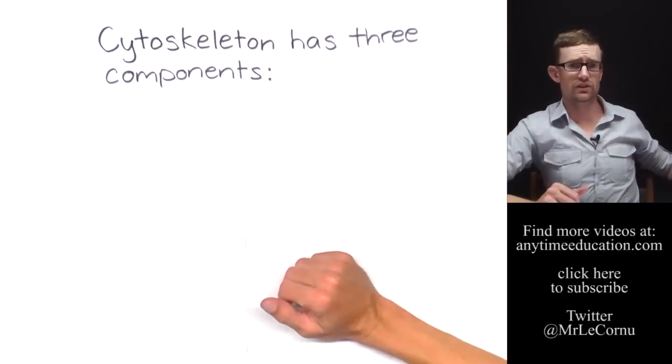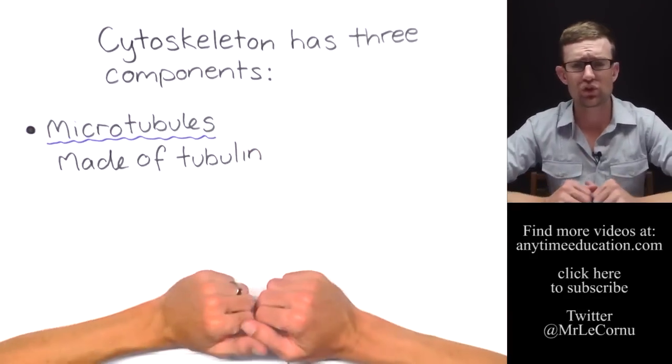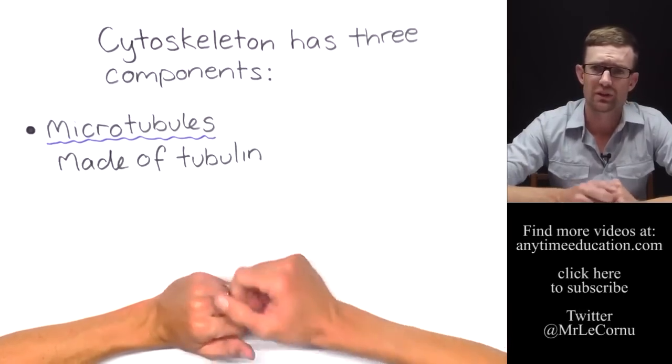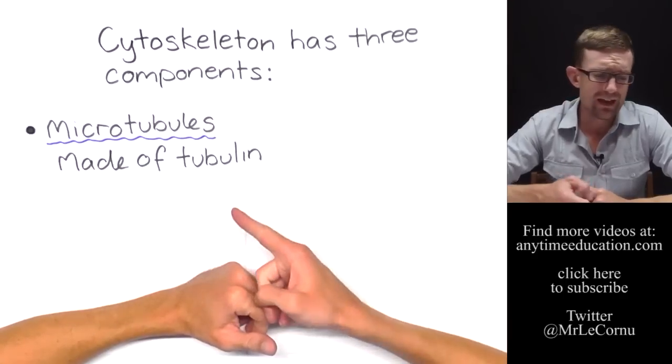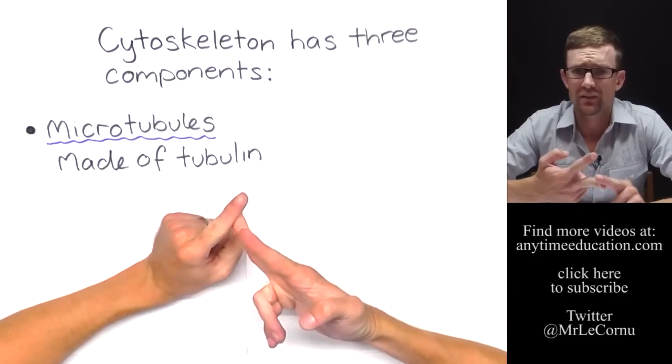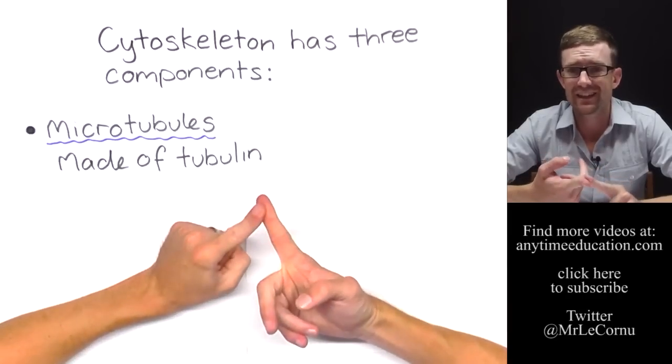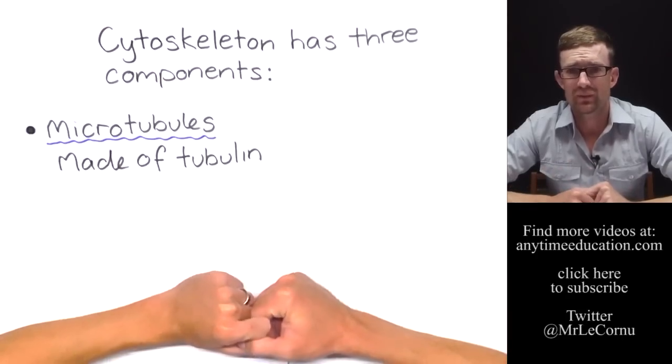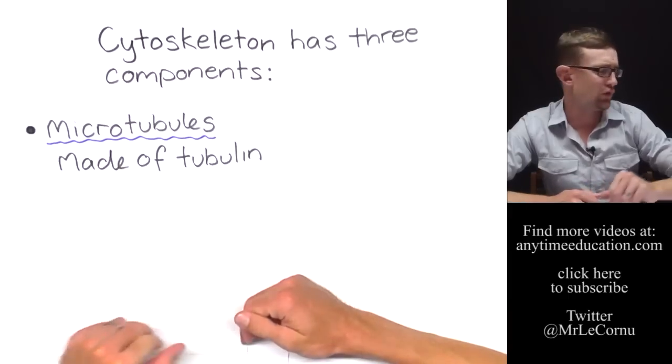Let's actually have a look at those three components in a bit more detail. So the first component of the cytoskeleton that we've started to talk about already are microtubules. Microtubules are made of a protein called tubulin. Microtubules are involved in cell movement. They are what make up the flagella, like the flagellum in the sperm that we looked at, and cilia, like the cilia on the paramecium cell that we looked at. That's where we find microtubules and some examples of their involvement.